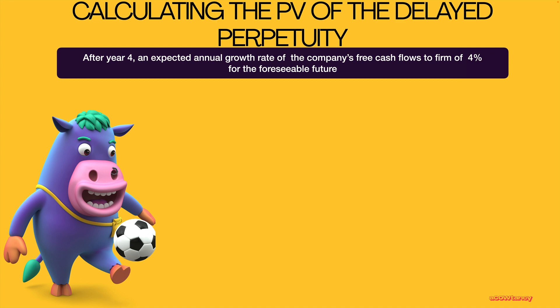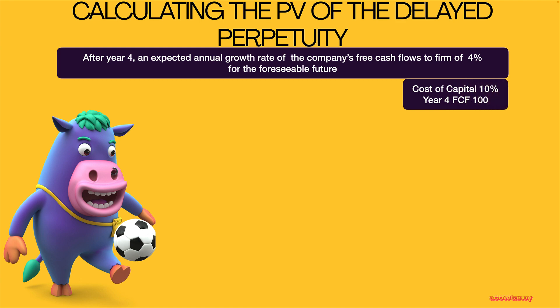So after year four, you're told there's an expected annual growth rate to the company's free cash flows of 4% for the foreseeable future — meaning it's a perpetuity, it goes on forever. Cost of capital is 10% and year four's free cash flows were 100.